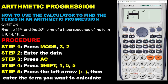The X column will be filled by the terms, and the Y column will be filled by the corresponding values for those terms. In this question, we have 4 as the first number, 9 as the second, 14 as the third, and 19 as the fourth. The first number goes here, the second number here, the third number here, and the value for the first number is 4.